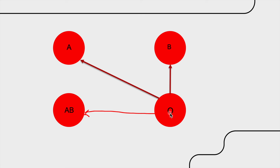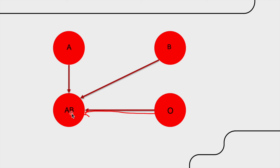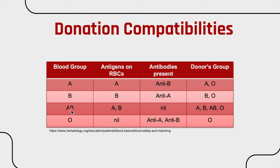People with AB can receive blood from all groups but cannot donate to everyone. Based on that, I made a table — you can take a screenshot of this. I'll wait for a second.